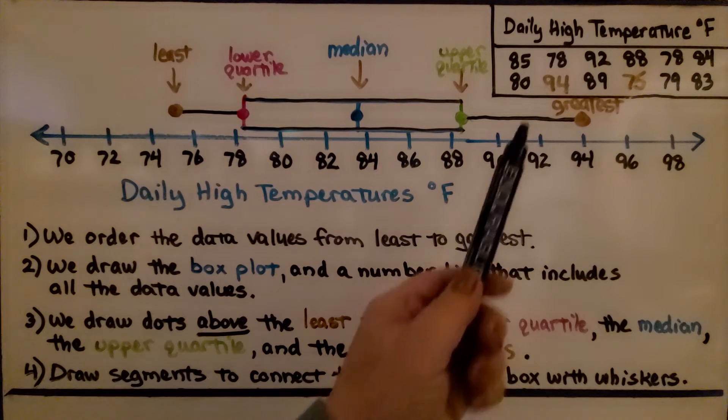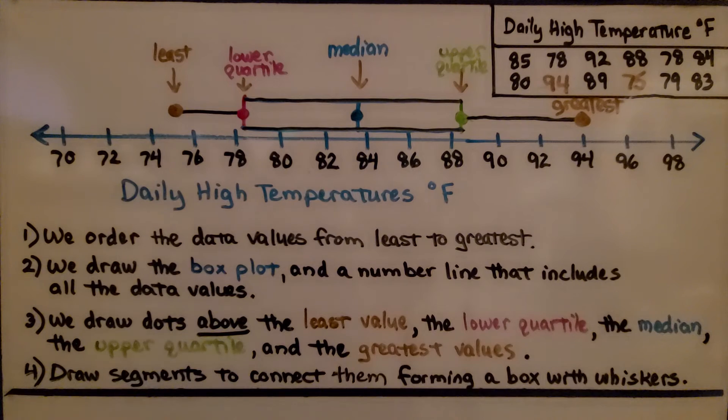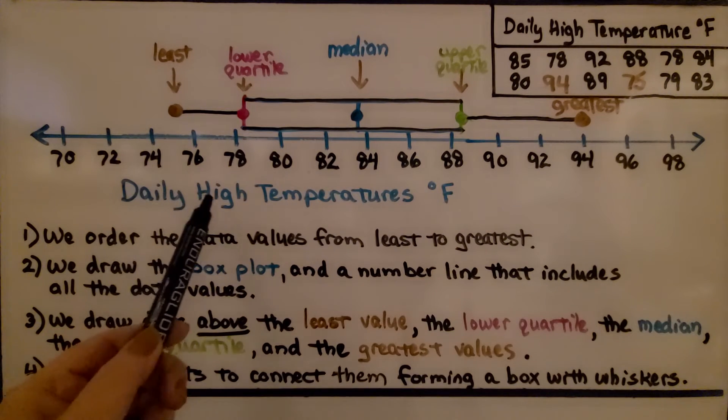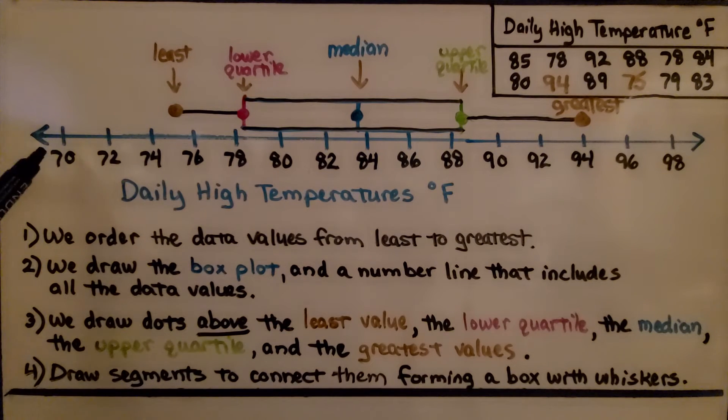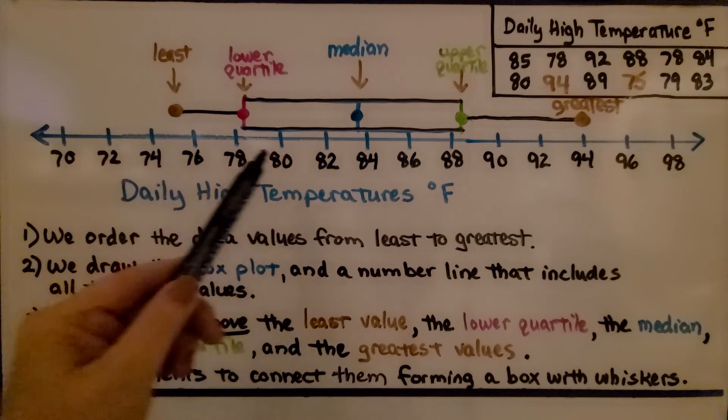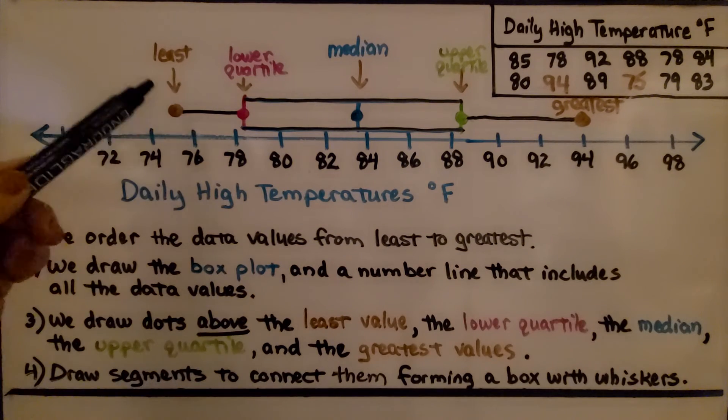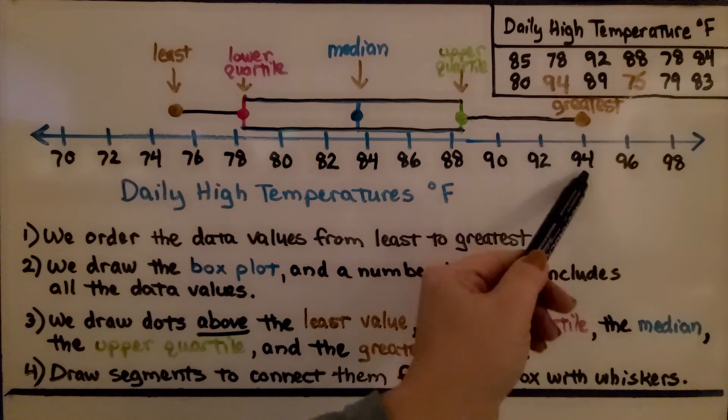So here our data values are some daily high temperatures in degrees Fahrenheit. We've got our number line, and it's labeled daily high temperatures degrees Fahrenheit. And we've got our temperatures, and you can see they're skip counting by twos. And we've got our least value, which is 75, and our greatest value is 94.